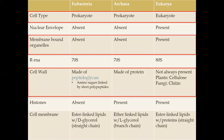This table goes over structures that each domain has. Eubacteria is just another name for domain Bacteria. Looking at cell type, Archaea and Eubacteria are both prokaryotes, while Eukarya is the only eukaryote. Regarding the nuclear envelope — the membrane around the nucleus — Eubacteria and Archaea do not have it, while Eukarya does. The same applies to organelles: Eubacteria and Archaea lack them, while Eukarya has them.